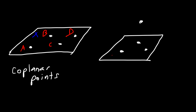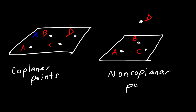Now let's say this is A, B, C, D. These four points are known as non-coplanar points because they do not lie on the same plane. A, B, and C lie on the plane, but D is outside of the plane.